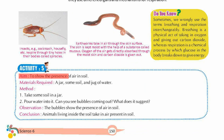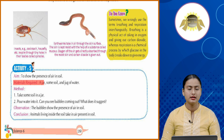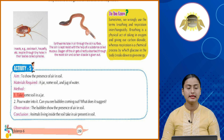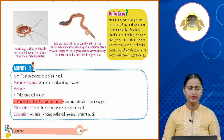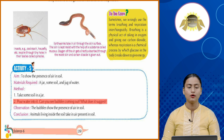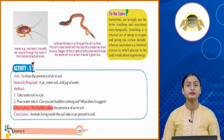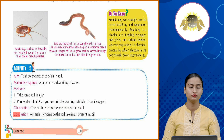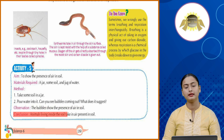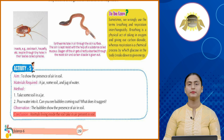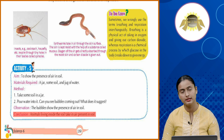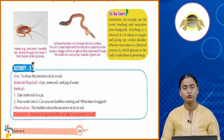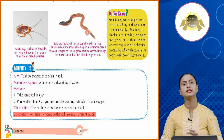Activity 5 — aim: to show the presence of air in soil. Materials: a jar, some soil, and a jug of water. Method: take some soil in a jar and pour water into it. You will see bubbles coming out, which shows the presence of air in soil. Animals living inside the soil take in the air present in the soil.